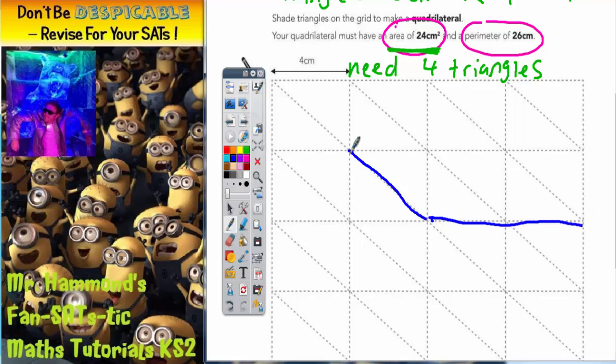2 across the bottom, 2 across the top. Now, we've already said that we need 4 triangles. And this is 1, 2, 3, 4.